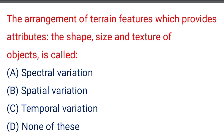Next question: the arrangement of the terrain features which provides or contributes to the shape, size and texture of the object is called — option A: spectral variation, option B: spatial variation, option C: temporal variation, option D: none of the above. The correct answer is option B: spatial variation.